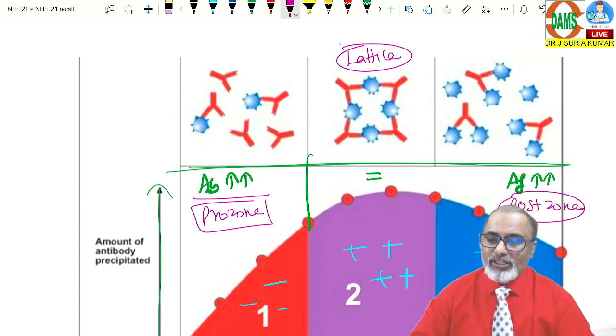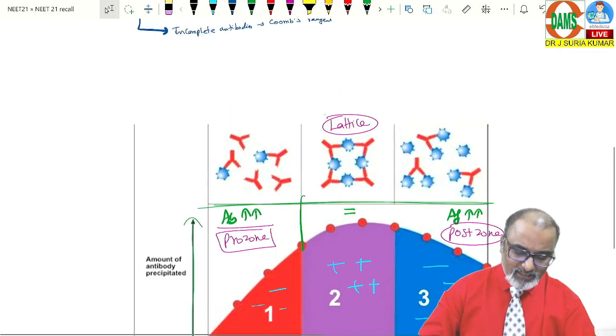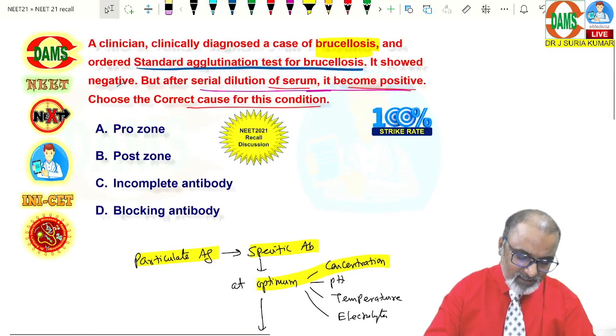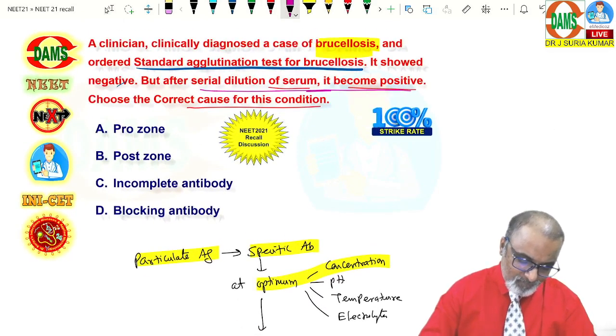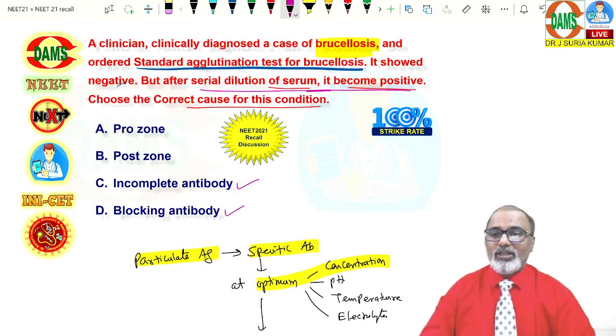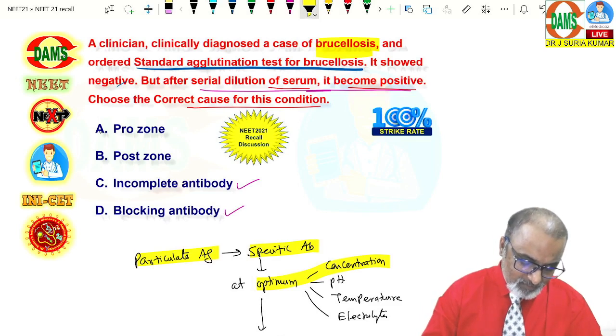If the antibody is excess, that is called prozone phenomenon. So based on this understanding, if you see clearly, incomplete antibody also cause false negative. Blocking antibody also cause false negative. But the remedy is not by serial dilution. Based on the serial dilution, it become again positive. It strongly indicates prozone phenomenon.